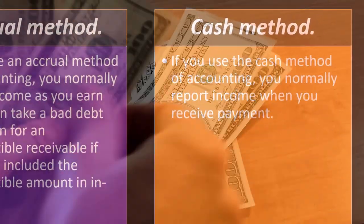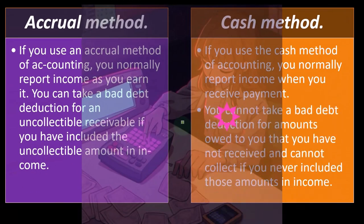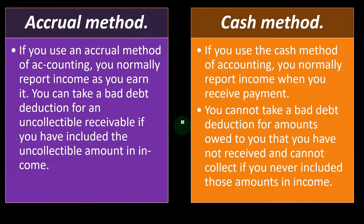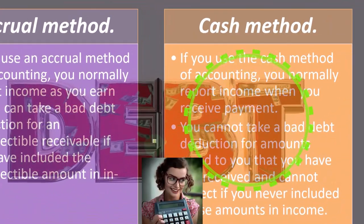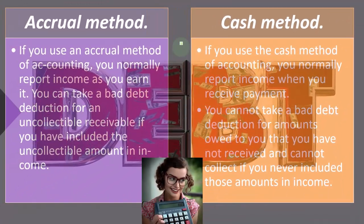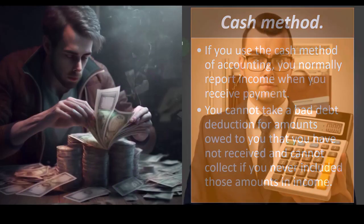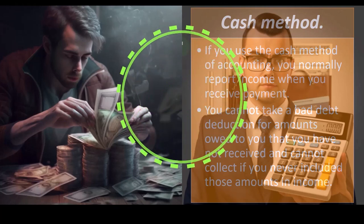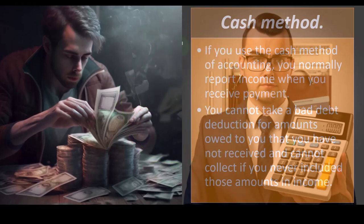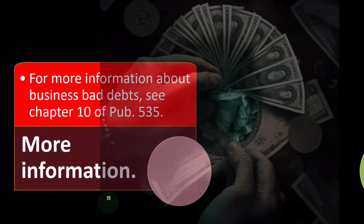Accrual method: if you use an accrual method of accounting, you normally report income as you earn it, and you can take a bad debt deduction for an uncollectable receivable if you included the uncollectable amount in income. However, if you use the cash method of accounting, you normally report income when you receive it. You cannot take a bad debt deduction for amounts owed to you that you have not received and cannot collect if you never included those amounts in income.